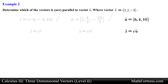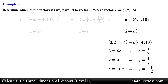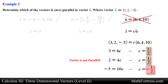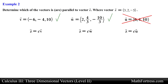Lastly we do the same for vector u, breaking apart the vector equation into separate components and solving for the scalar. Notice that the x and y components are the same, but the z component is different in sign. We need all three scalars to be the same for all components, including the sign. Since the scalar does not match across all components, we conclude that vector u is not parallel to vector z. So vector z is parallel to vector v and vector w only.